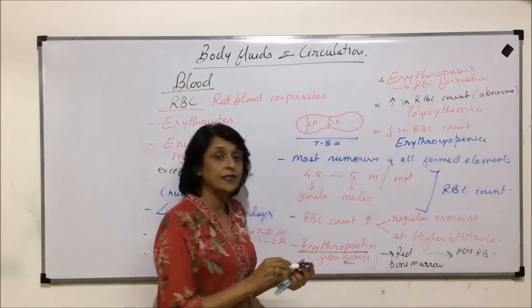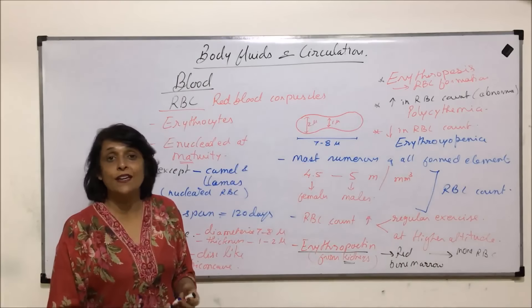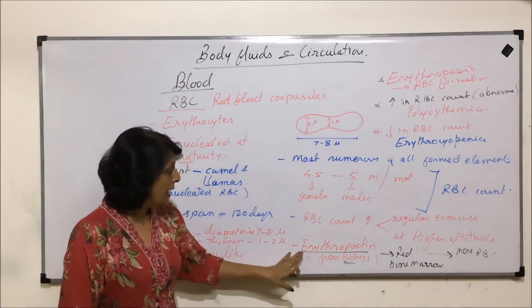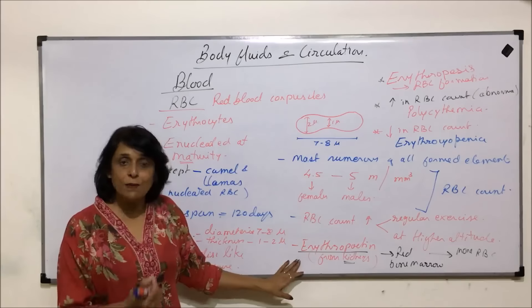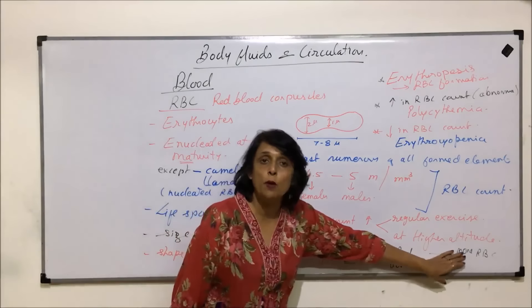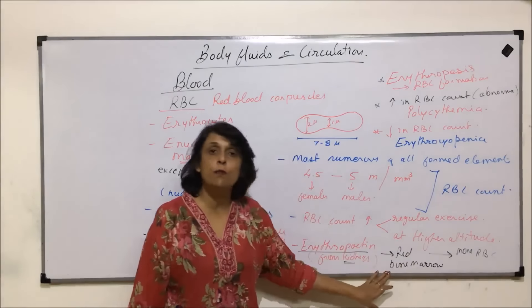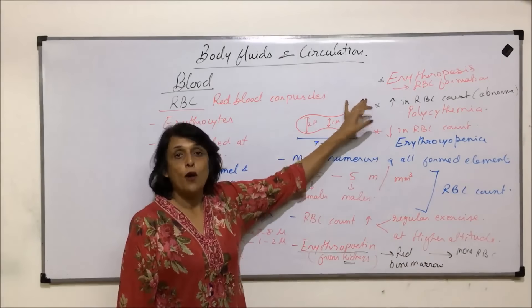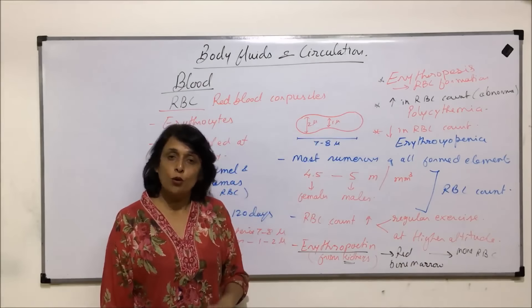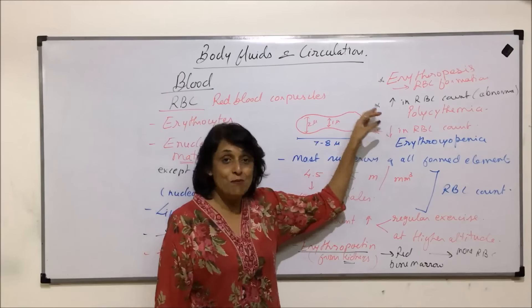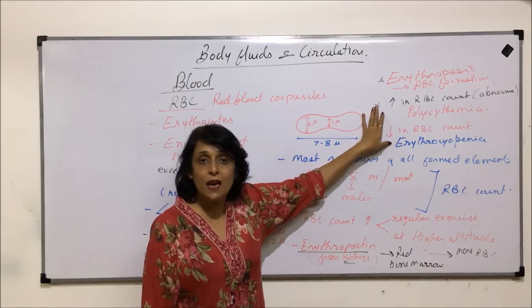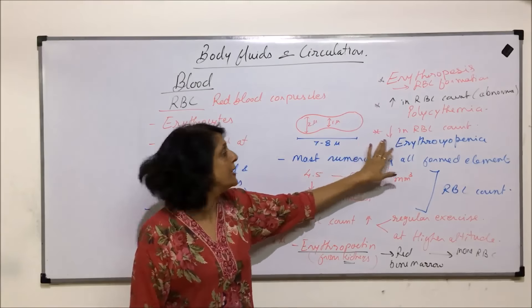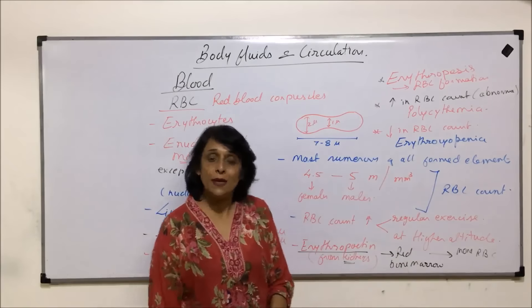These are certain terms which are associated with RBCs. Erythropoietin is the chemical which helps in formation of RBC in the red bone marrow. Formation of RBC is known as erythropoiesis. More than normal RBC count, polycythemia. Less than normal is erythrocythopenia.